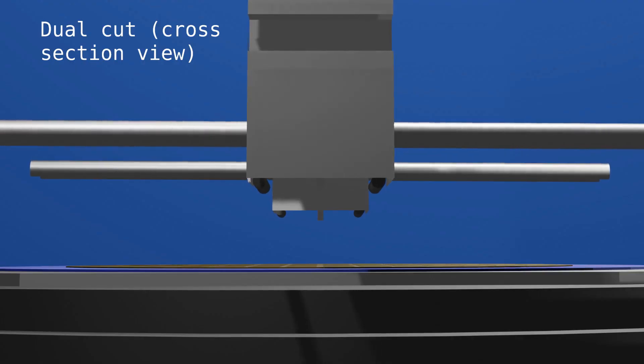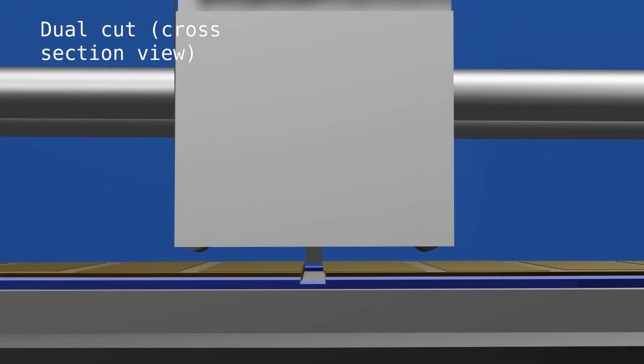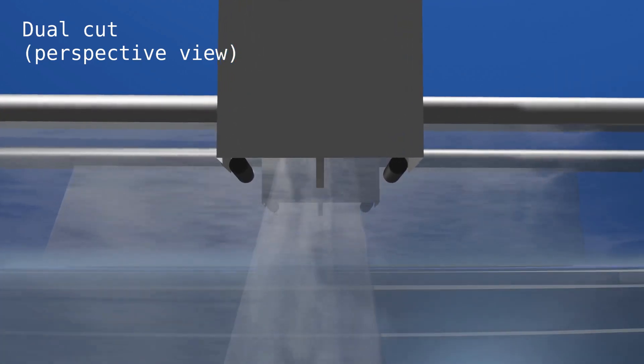In the dual cut process, the same blade passes through twice or two separate blades each pass through once to reduce the load on the blade or blades like we show here.